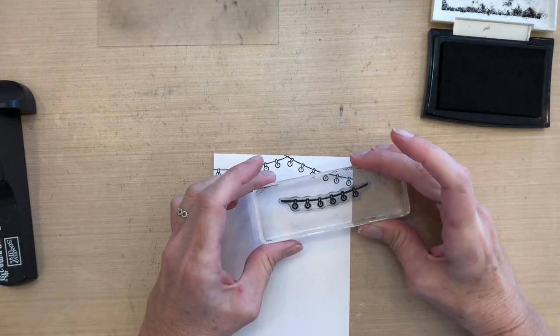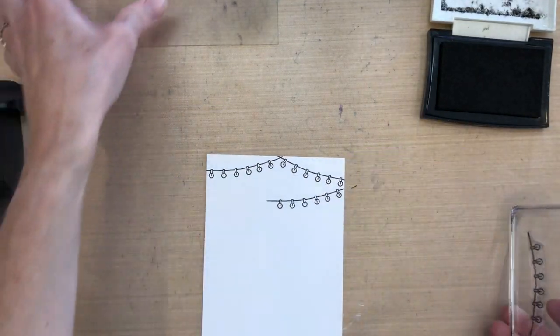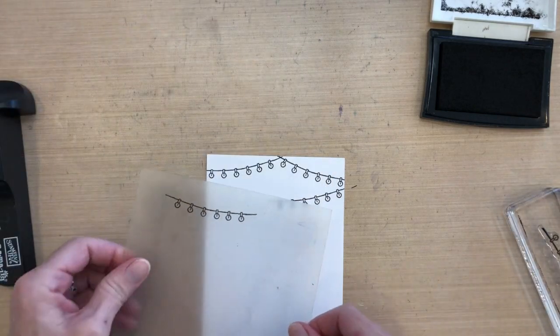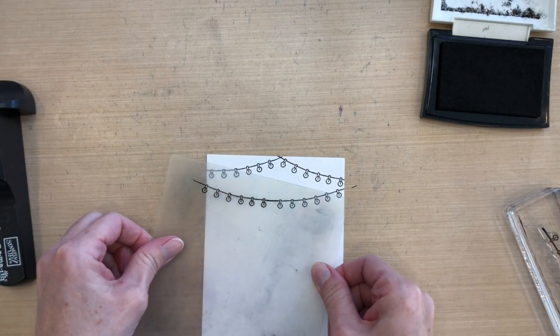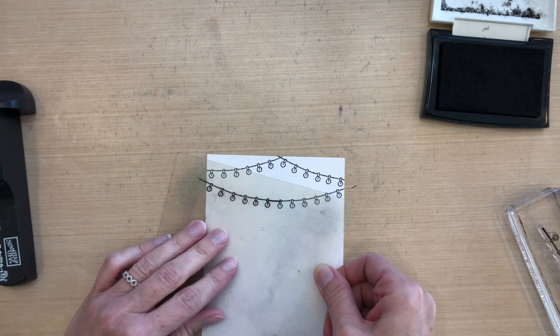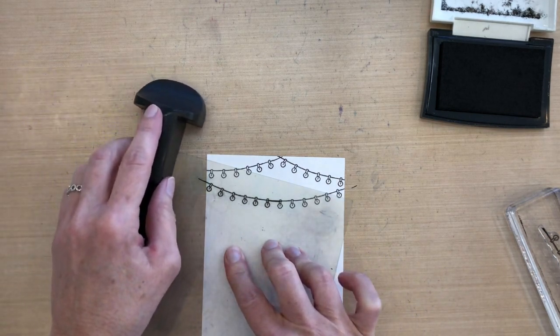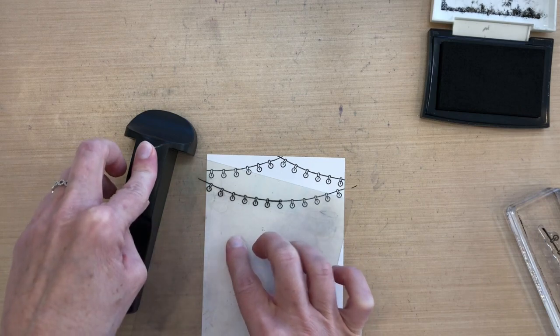I have a piece of Neenah Solar White cardstock and I'm gonna use my string of lights multiple times to just sort of make it drape across the card. Now this one's gonna need to be extended which is why I used my Stampin' Jig. So I'm gonna line it up right on top and I'm gonna overlap it just a little bit which is fine because I'm gonna be coloring those kind of little things above the light bulbs.